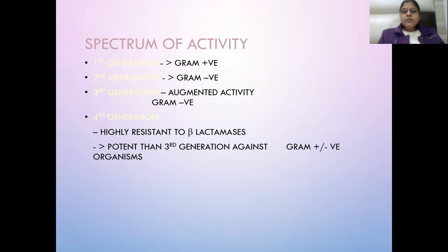First generation is effective against gram-positive organisms. Second generation is effective against both gram-positive and gram-negative, and also anaerobes. Third generation has augmented gram-negative activity. Fourth generation is resistant to beta-lactamases and has both gram-positive and gram-negative potency, with more action against gram-negative. Fifth generation is effective against MRSA.